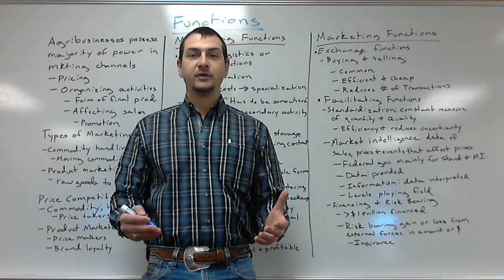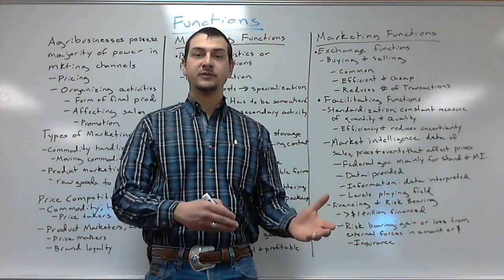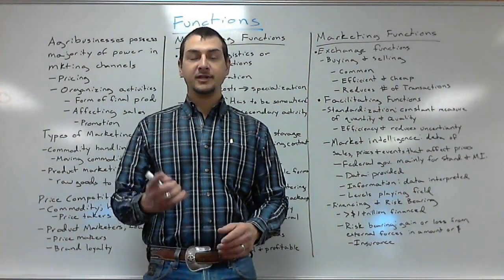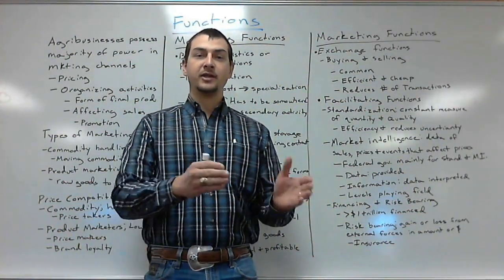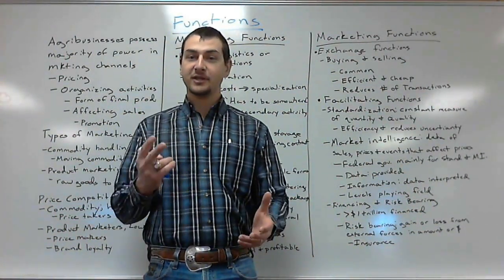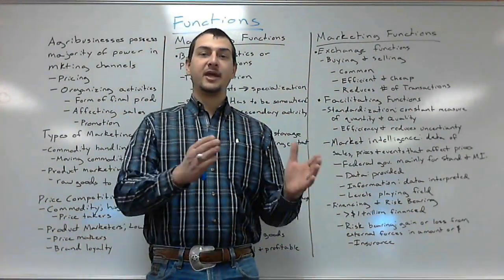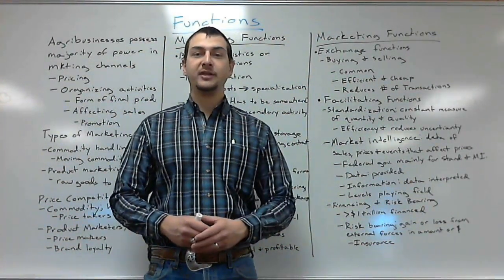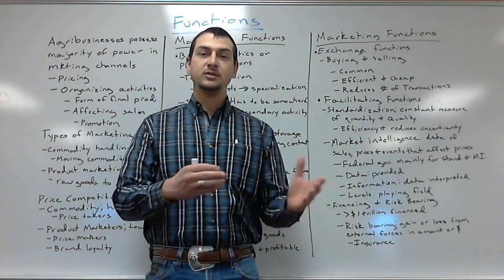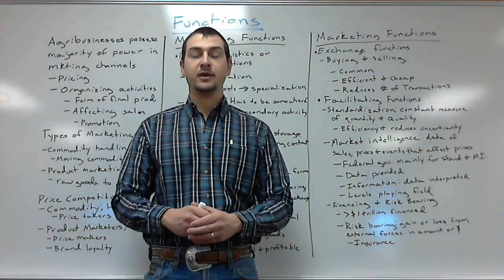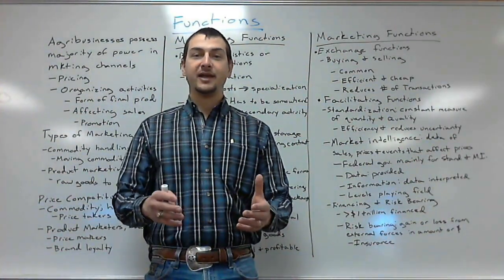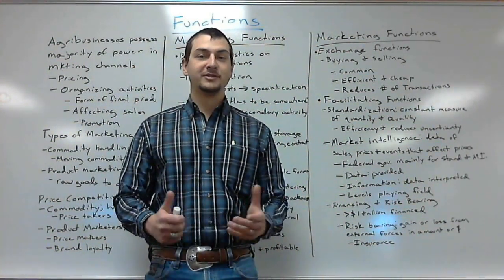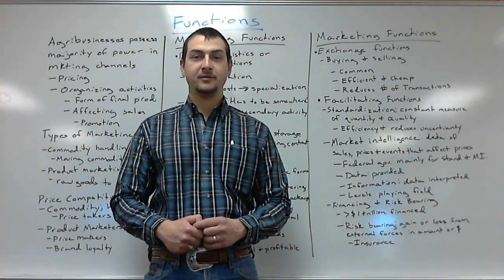So a calf, whenever it's weaned, is often taken to an auction barn and sold there. That's one sale. Then it's turned around and sold to a stocker or backgrounder — that's two sales. That same animal is then sold to a feedlot — that's the third sale. Then to a packer — that's the fourth sale.